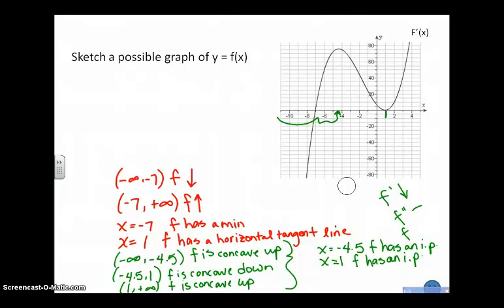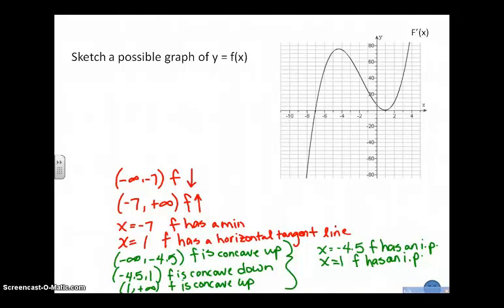Let's see what we can do about getting an accurate graph for f. I don't know where f has zeros — I have no idea where it crosses the axis. All I know is about decreasing, increasing, maxes, mins. From negative infinity to negative 7, f is decreasing. I don't know whether it crosses the x-axis or where it sits vertically. What I do know for certain is that it is decreasing from negative infinity to negative 7, and it is increasing after that.